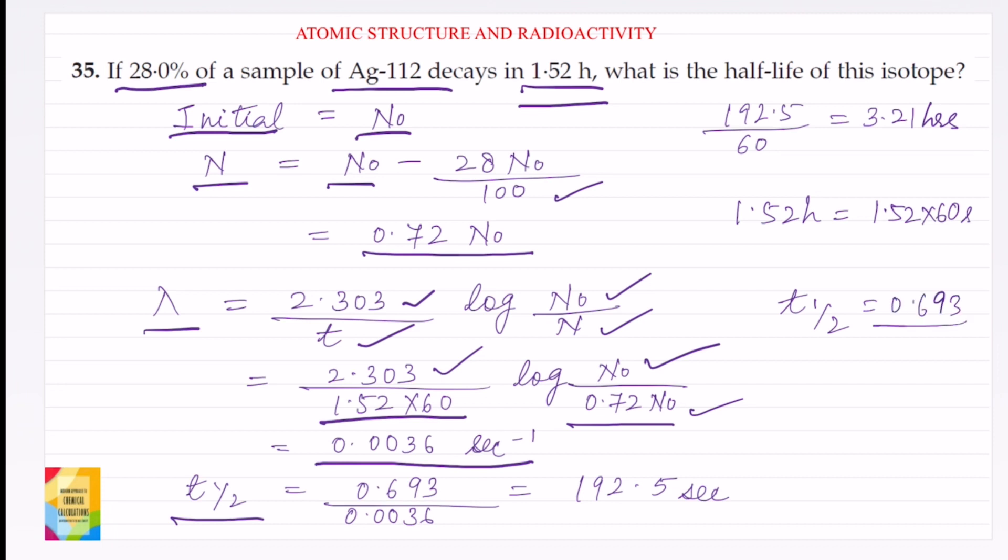So t half will be equal to 0.693 divided by 0.0036 which is equal to 192.5 seconds. So the answer to this question is 192.5 seconds.